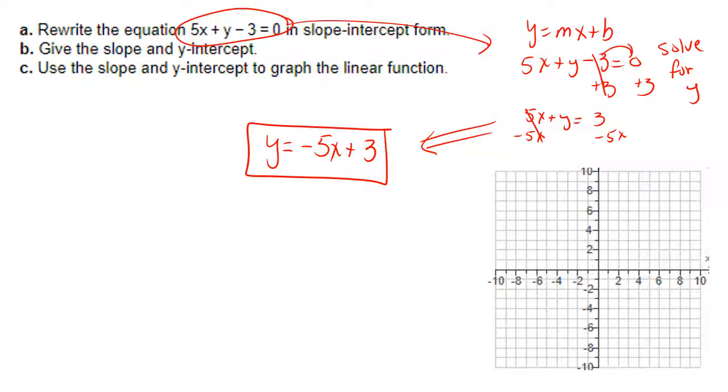I notice that 3 is my y-intercept. That's what I must graph first. So go to positive 3 on the y-axis and put a point. Then my slope is negative 5. But that's not written as a fraction. So simply rewrite negative 5 as negative 5 over 1.